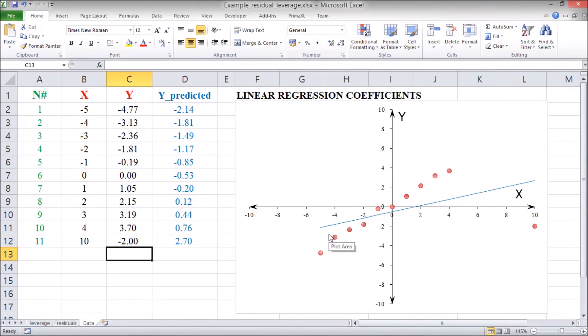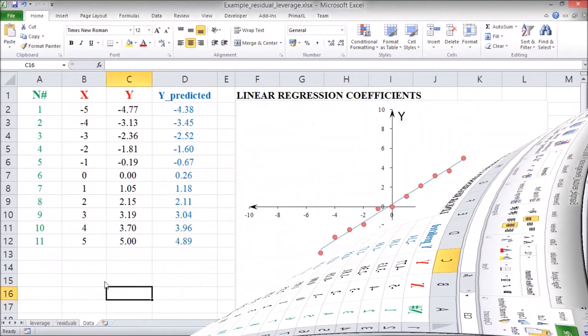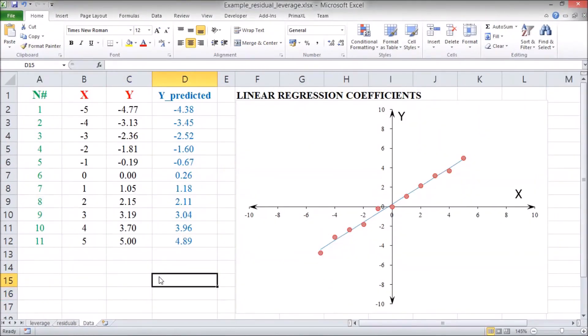Now, back to the datasheet, let us move a data point at the low leverage position. This time, only vertically or in the y direction. Well, the estimation line does move, but the change is not as drastic as before.